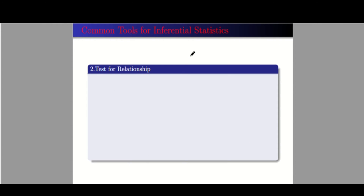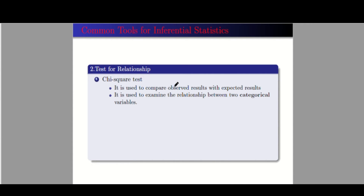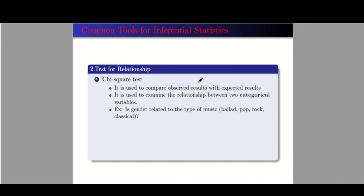Now let's go to the second common tool for inferential statistics — the test for relationships. We have the chi-square test. You use the chi-square test if you want to compare observed results versus expected results, or if you want to examine the relationship between two categorical variables. For example, is gender related to the type of music? We have two categorical variables — gender and type of music — so you distribute your respondents accordingly.